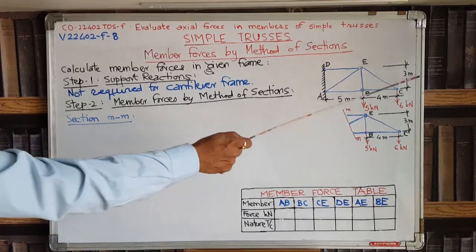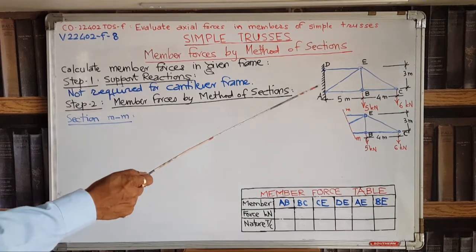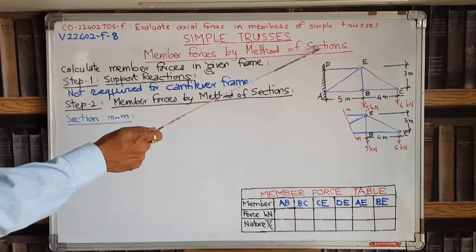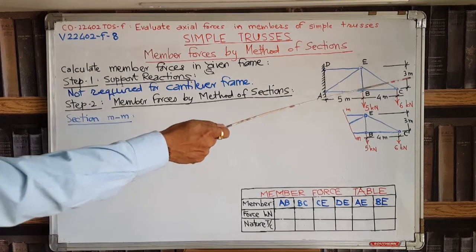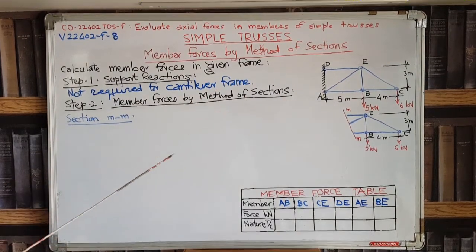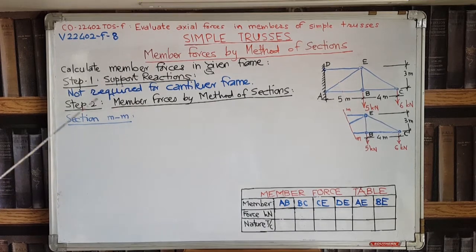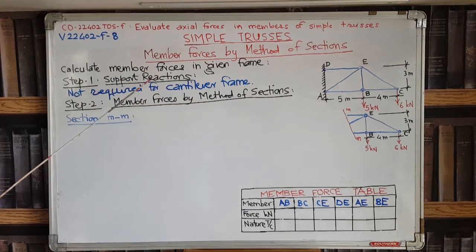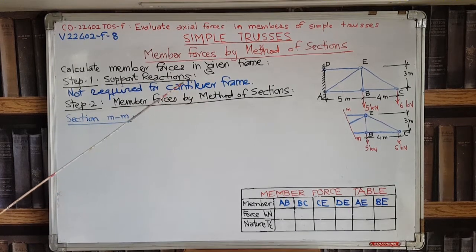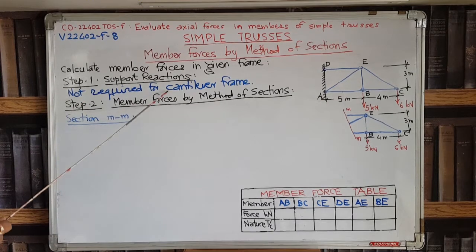The problem is to calculate member forces in a given frame ABCDE. This is a cantilever frame, meaning it is supported only on one side by a fixed support and the entire frame projects out without any support outside. For method of sections, as with method of joints, a cantilever frame does not require calculation of support reactions. Support reactions are only needed if it is a simply supported frame, so step one is already complete.